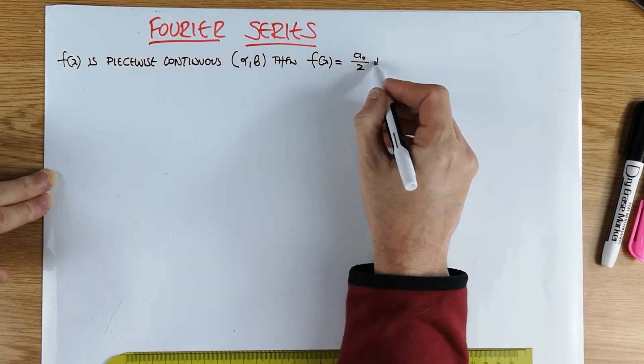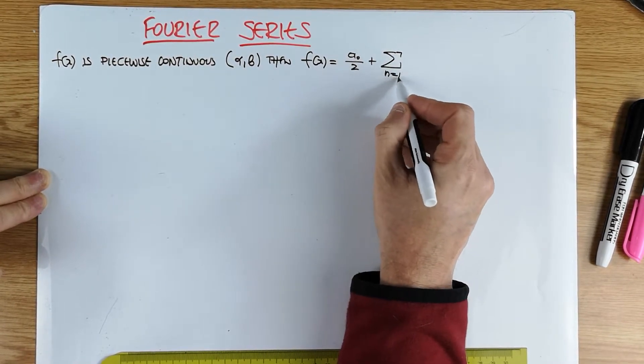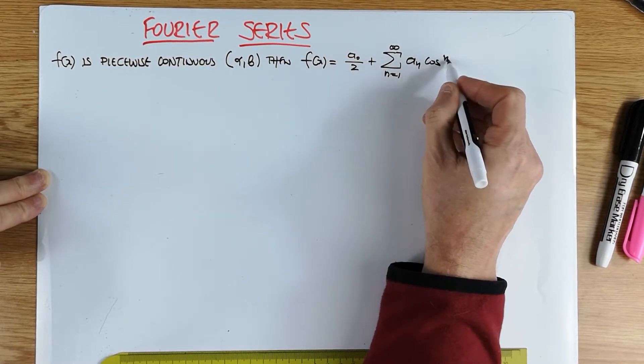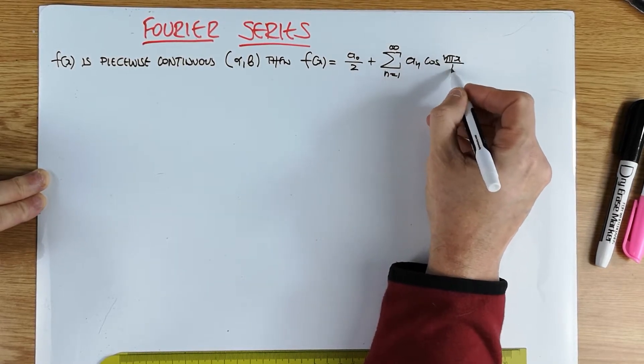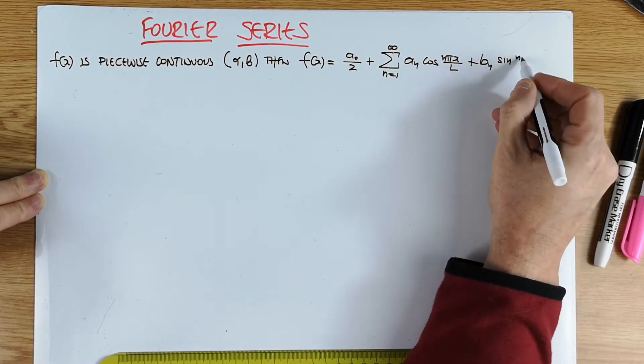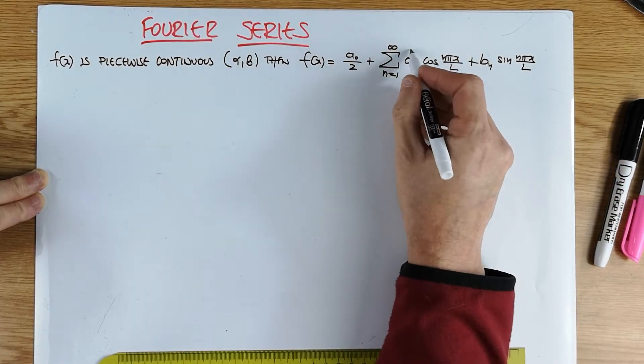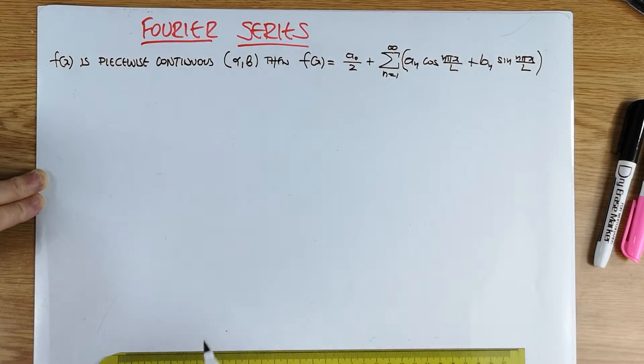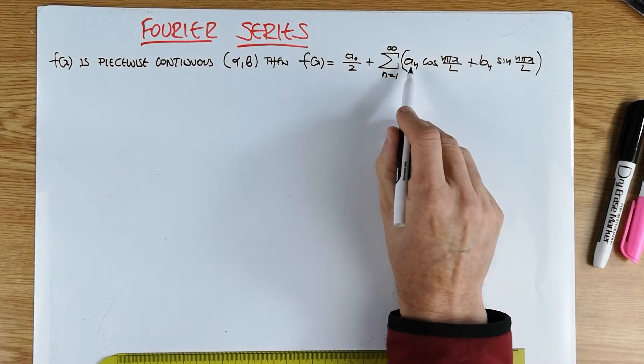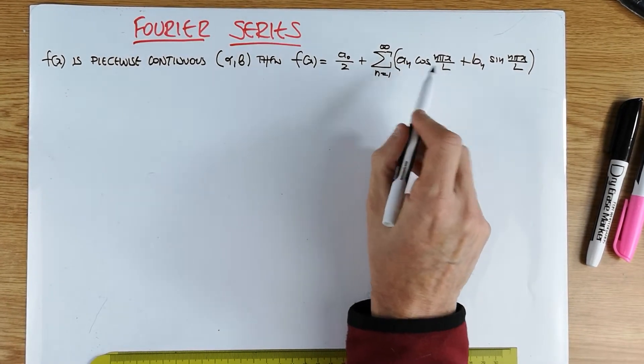a0 over 2 plus an infinite series from n equals 1 to infinity, an cos n pi x over l plus bn sin n pi x over l. Looks quite something the first time you see it, but it's actually very easy. And of course we need to define a couple of quantities: what are the a_n's and the b_n's and the a0, and also the l.